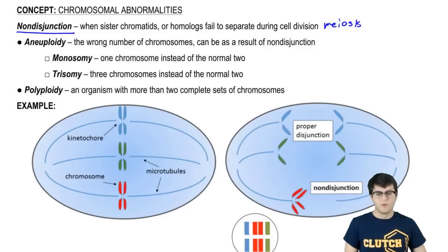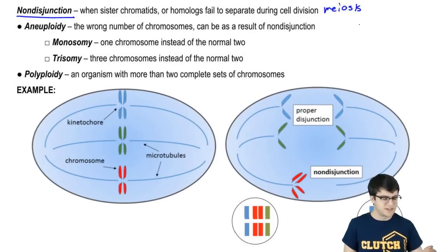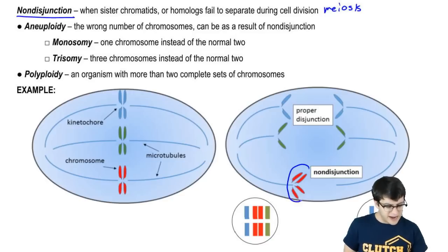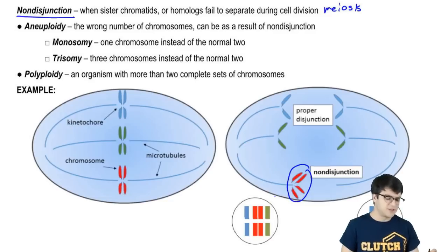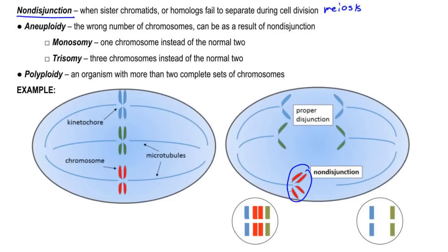If you have a non-disjunction, you'll have an extra chromosome going to one cell and another cell missing a chromosome, and this results in aneuploidy.